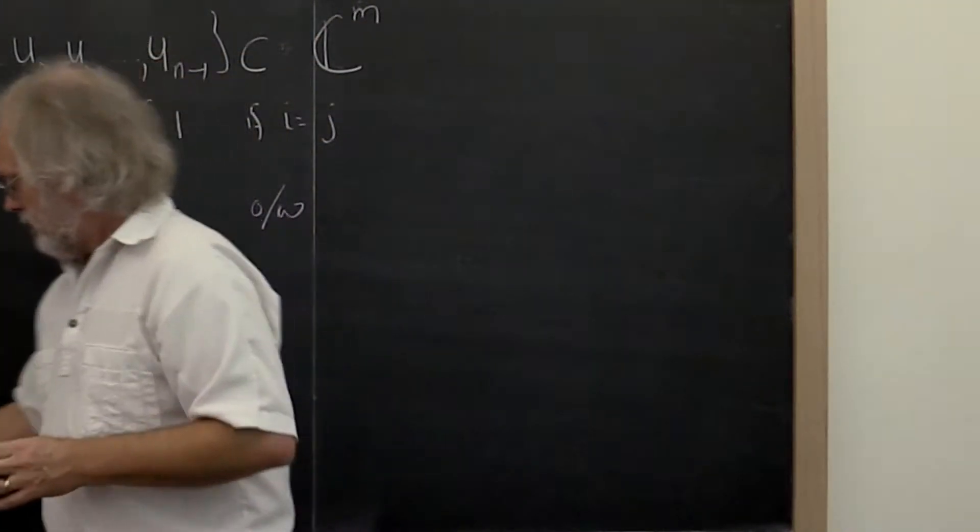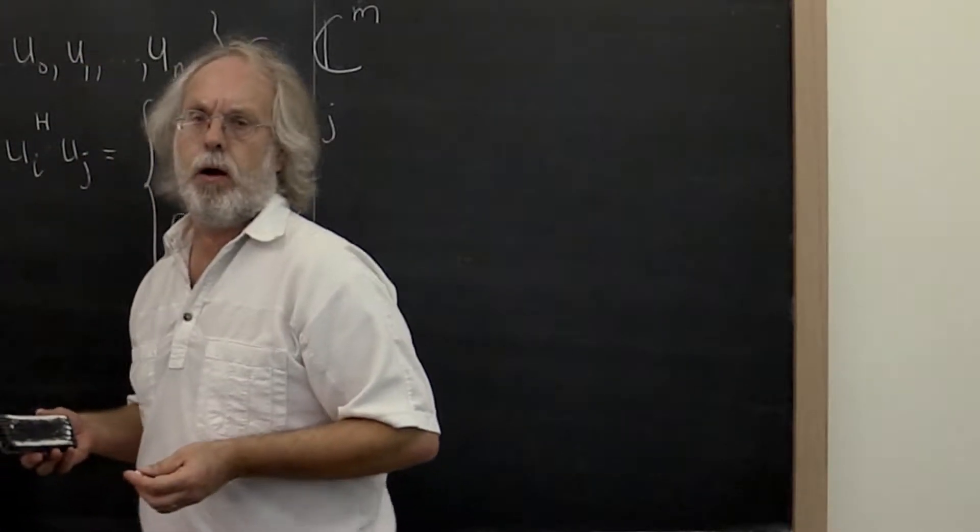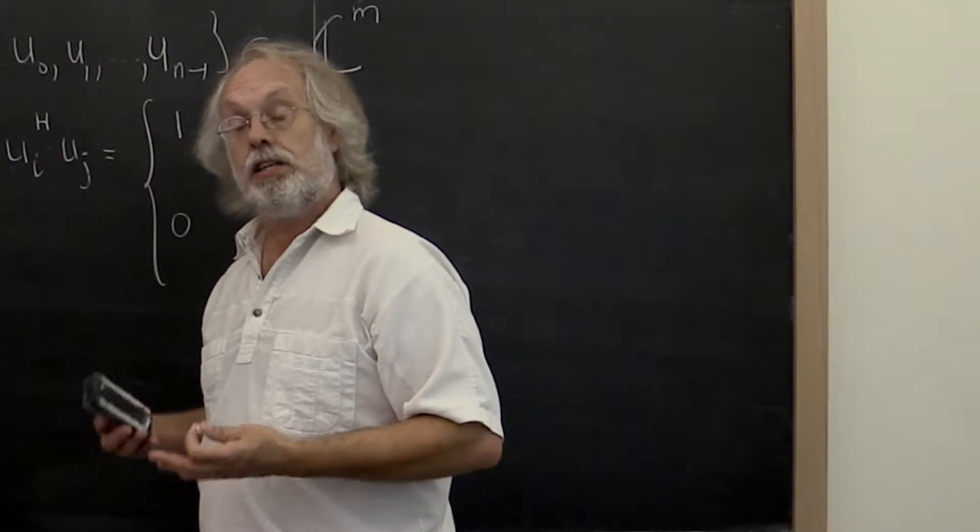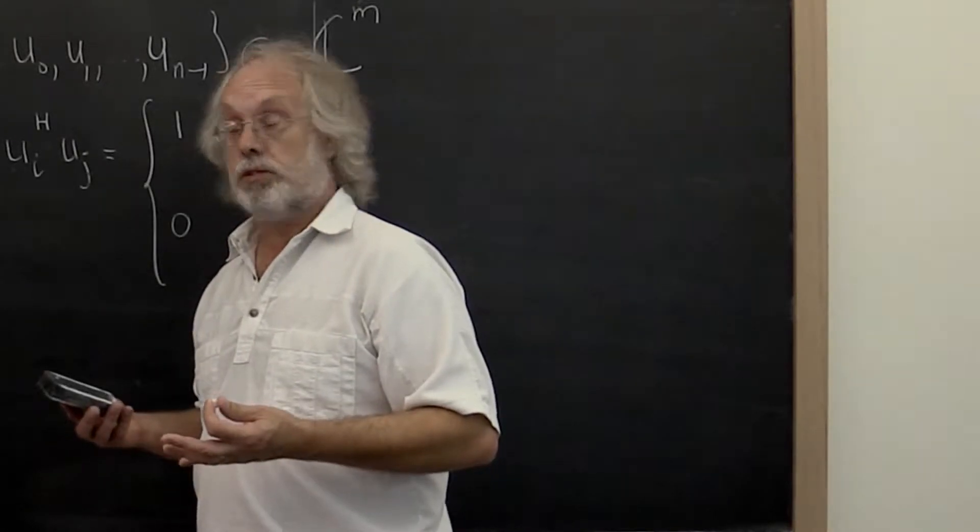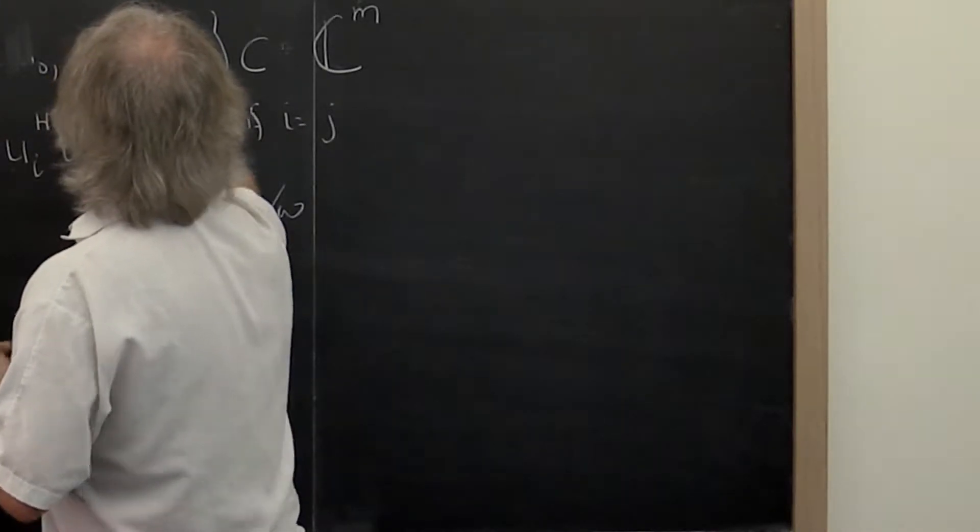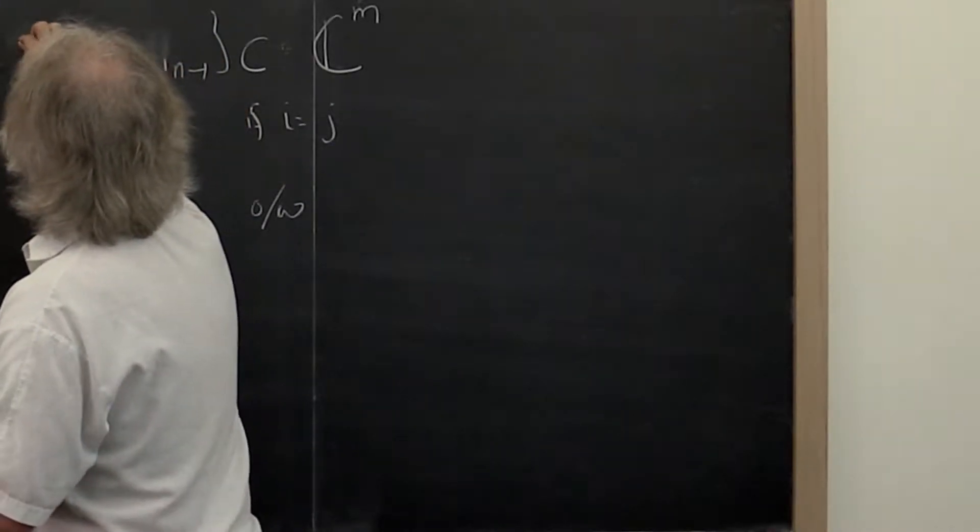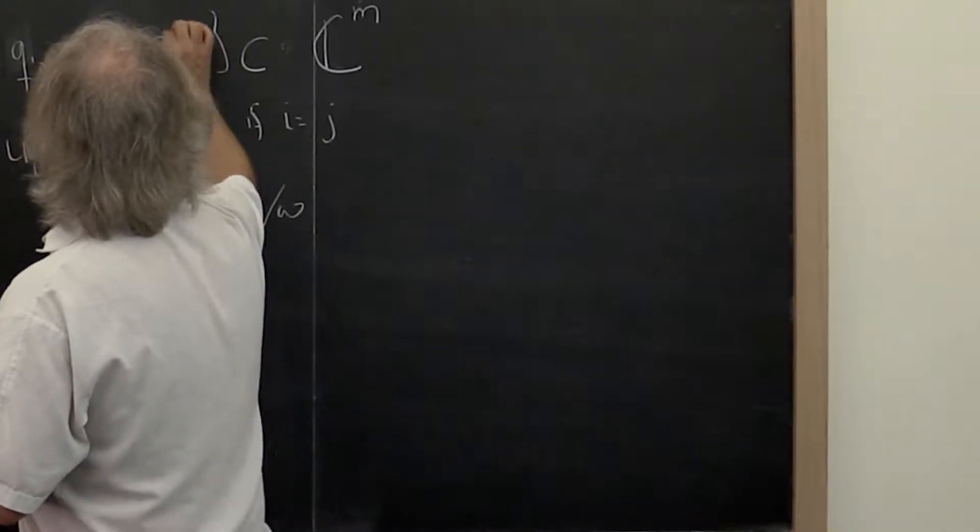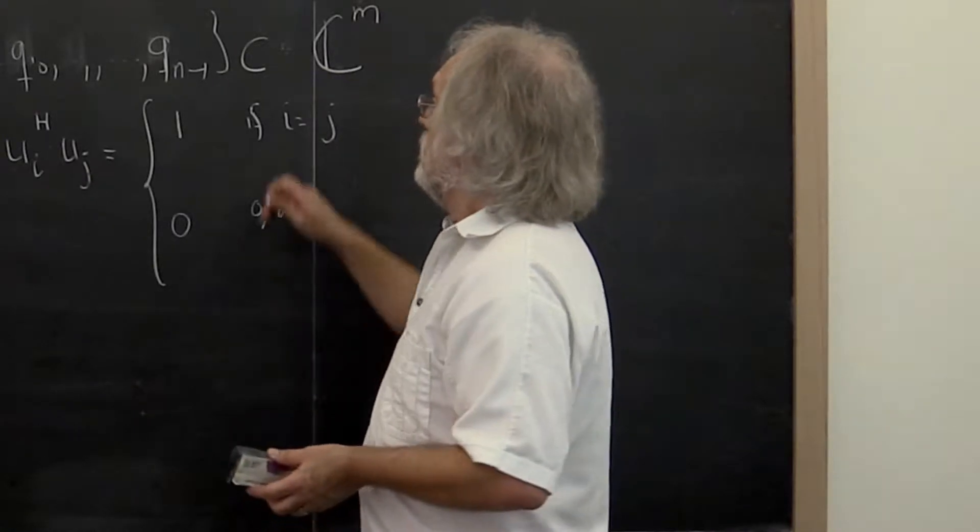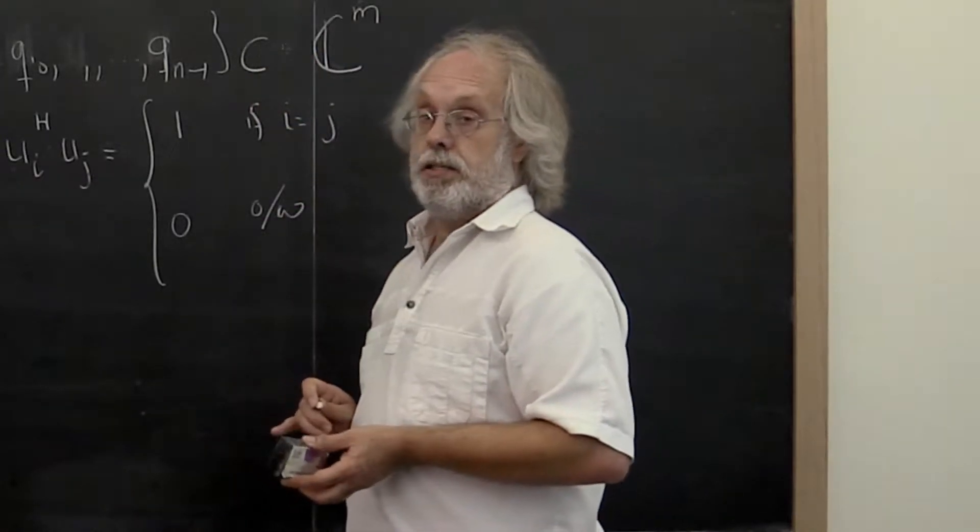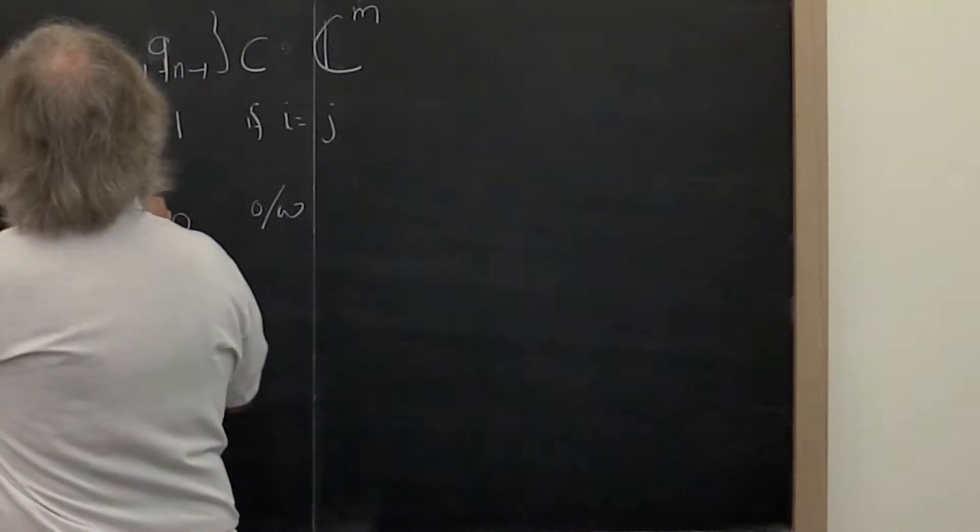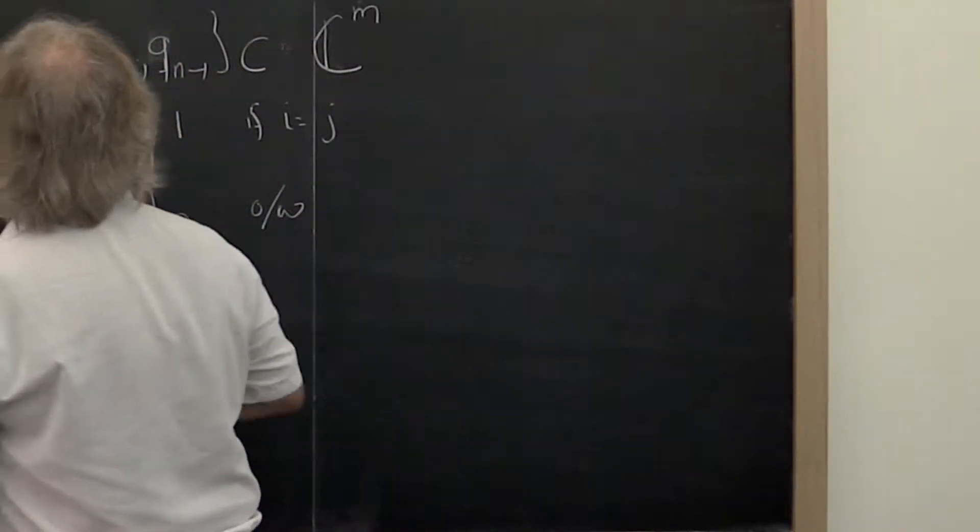For historical reasons, when we start talking about such matrices, we tend to use the letter q for the columns. So I'm going to change the u here to a q and say, we have n mutually orthonormal vectors q0 through qn minus 1, all in Cm. And we know that they have this property right here.